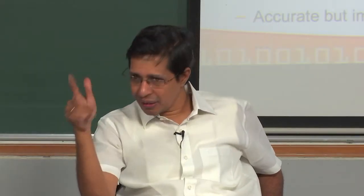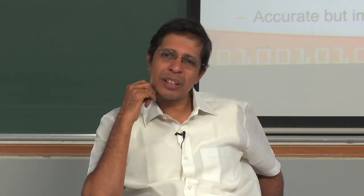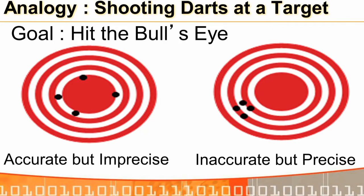Consider shooting dots on a target. On the left-hand side, the hits are almost accurate — very close to the centre red circle — but imprecise, because the dots are spread far from each other. On the right-hand side, the dots never reach the centre circle, so it is inaccurate, but they are clustered together — precise.